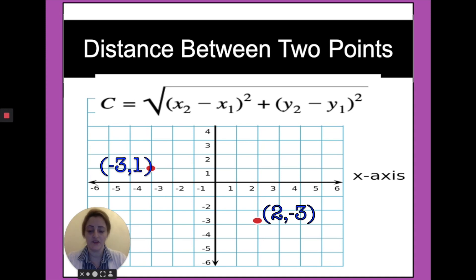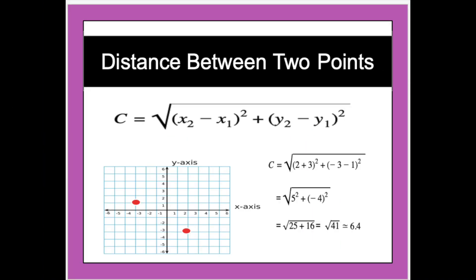So the distance between these two points is c. So c equals the square root of (x2 minus x1)² plus (y2 minus y1)². We replace x2 by 2 and x1 by minus 3, so x2 minus x1 becomes 2 minus minus 3, which becomes plus 3, so 2 plus 3 is 5 squared. Plus y2 is minus 3 minus y1 which is 1, so minus 3 minus 1 equals minus 4, so it will be minus 4 squared. The square root of 5² plus (minus 4)² equals the square root of 25 plus 16, which equals the square root of 41, approximately equal to 6.4. So the distance between these two points equals 6.4.